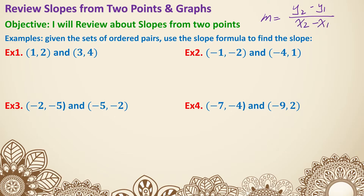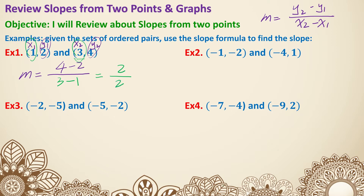If you struggle with identifying that, any time you see two points, just label them. The first point will have x1, y1. The second point will have x2, y2. So now we can put everything into the slope formula. M equals, on the top is y2 minus y1 — y2 is 4, y1 is 2 — so it's 4 minus 2 on the top. On the bottom is x2 minus x1 — x2 is 3, x1 is 1 — so 3 minus 1. The top 4 minus 2 is 2, bottom 3 minus 1 is also 2. Simplify the fraction: 2 divided by 2 equals 1.